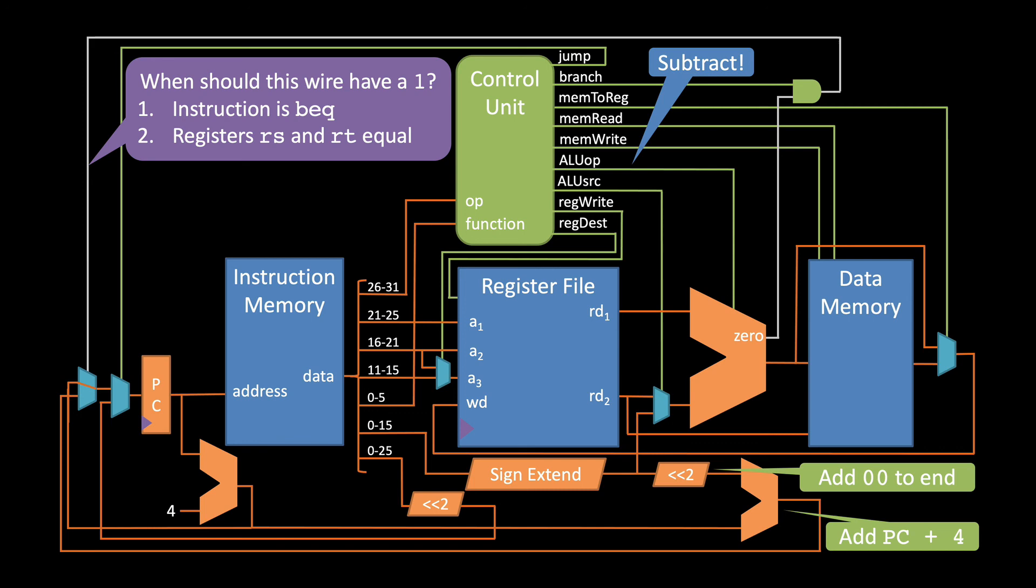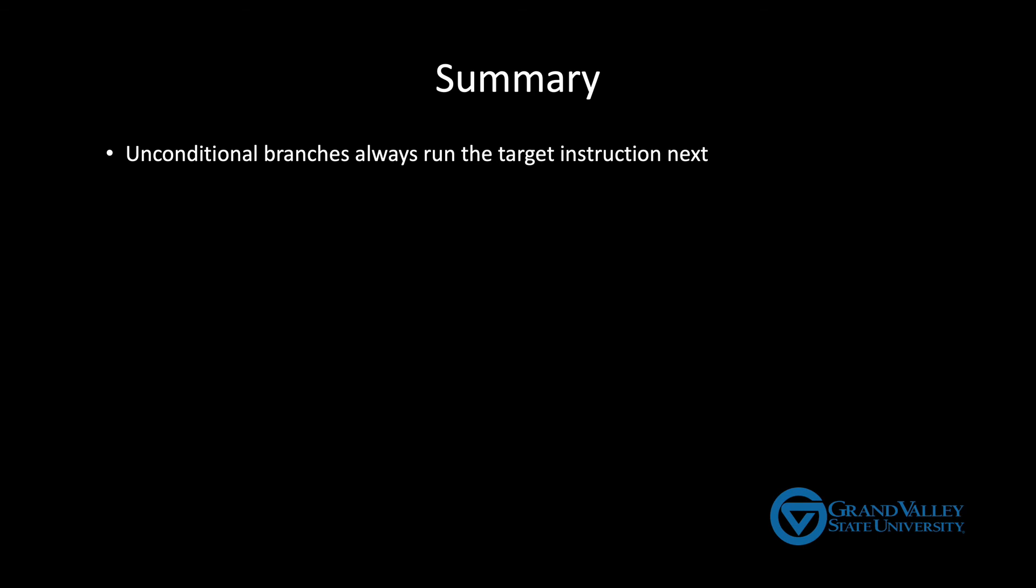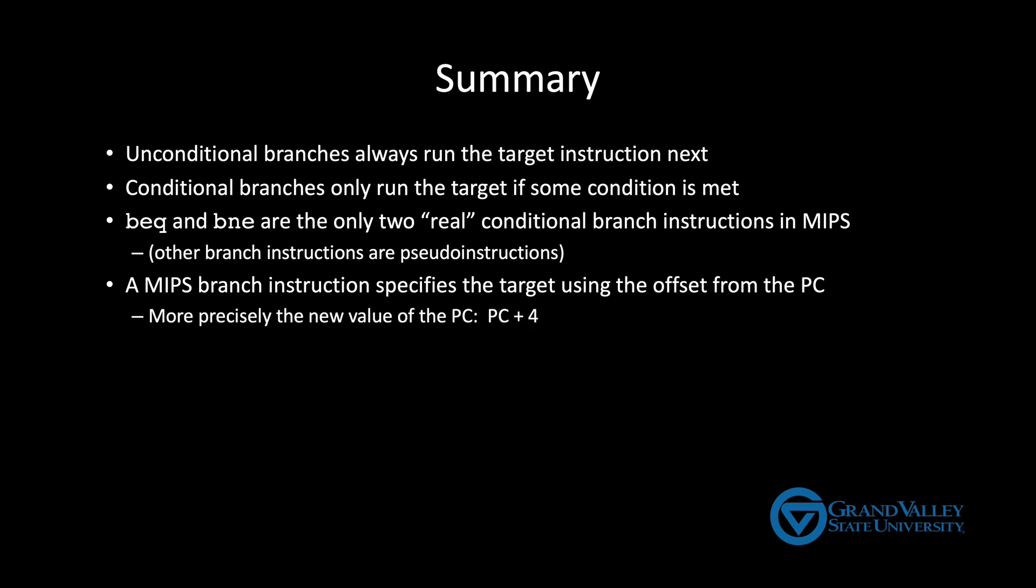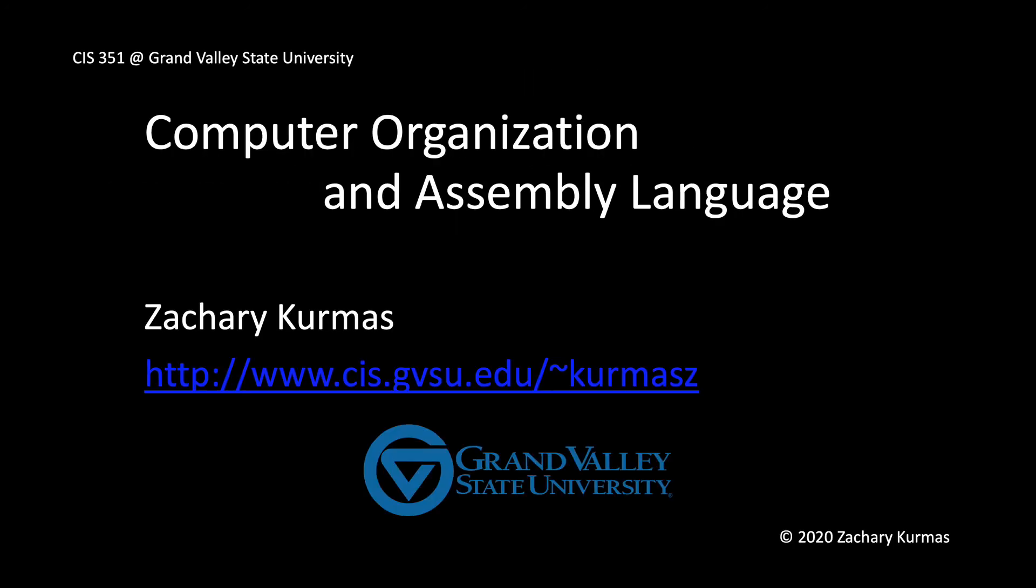So to summarize, remember there's two kinds of branches: unconditional branches that always run the target instruction. In MIPS, this is a jump. And there's also conditional branches that only move to the target if some condition is met. In MIPS, there's only two of these conditional branches implemented directly in hardware: branch if equal and branch if not equal. All the other branch instructions are actually pseudo instructions. The MIPS branch instructions specify the target using an offset from the program counter. They tell you how many instructions away you're branching, as opposed to specifying the complete absolute target address. And to be precise, the offset is given from the address of the next instruction, from the program counter plus four. And we'll see why that is when we get to pipelining in a few weeks. Finally, remember the ALU has a zero output that tells you whenever the ALU's output is exactly zero. And that's true regardless of the operation. This works for all operations, not just subtraction. In the next video, we'll look at some examples of assembly code using branches.